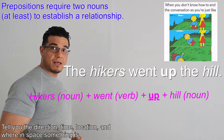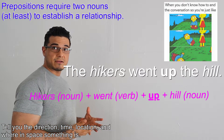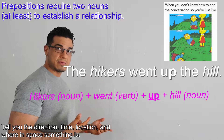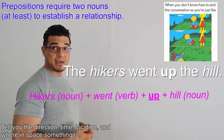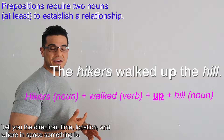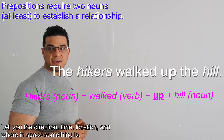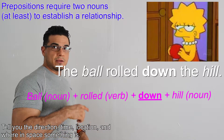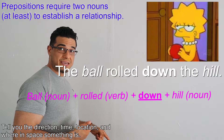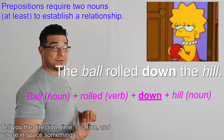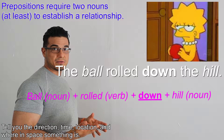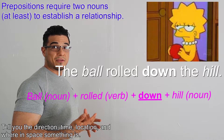Third example: the hikers walked up the hill. Here we've got the hikers, and the direction they traveled is 'up,' and the object that 'up' is acting upon would be the hill — so it tells you the direction that they're hiking, 'walked' being the verb. For number four, we have the ball rolled down the hill. The ball being our noun, 'rolled' being the action which is our verb, and the direction it traveled was 'down,' and the object that the preposition 'down' is acting upon would be the hill — telling you which direction and relative to what, which would be the hill, the ball is rolling.